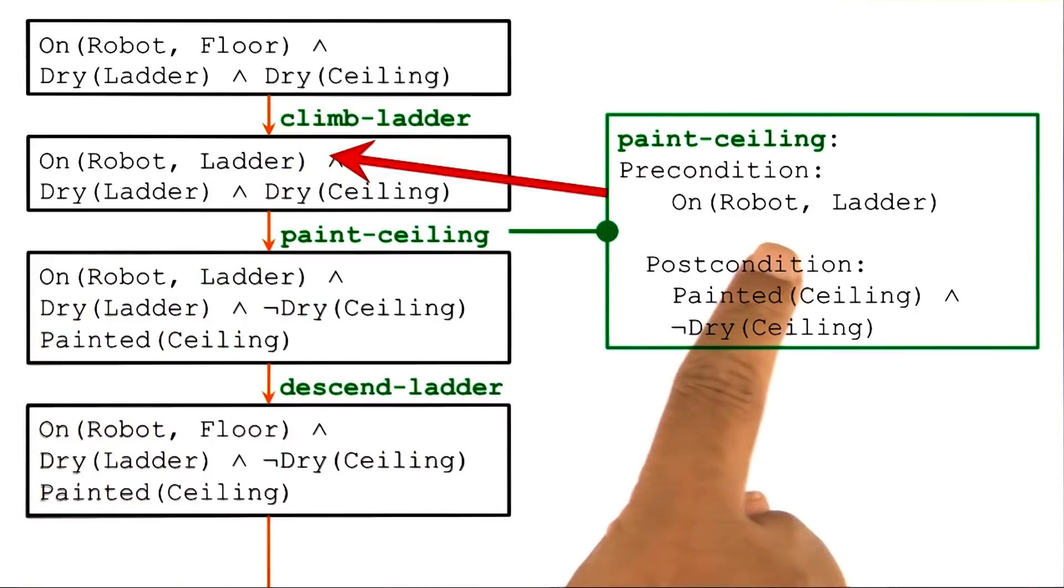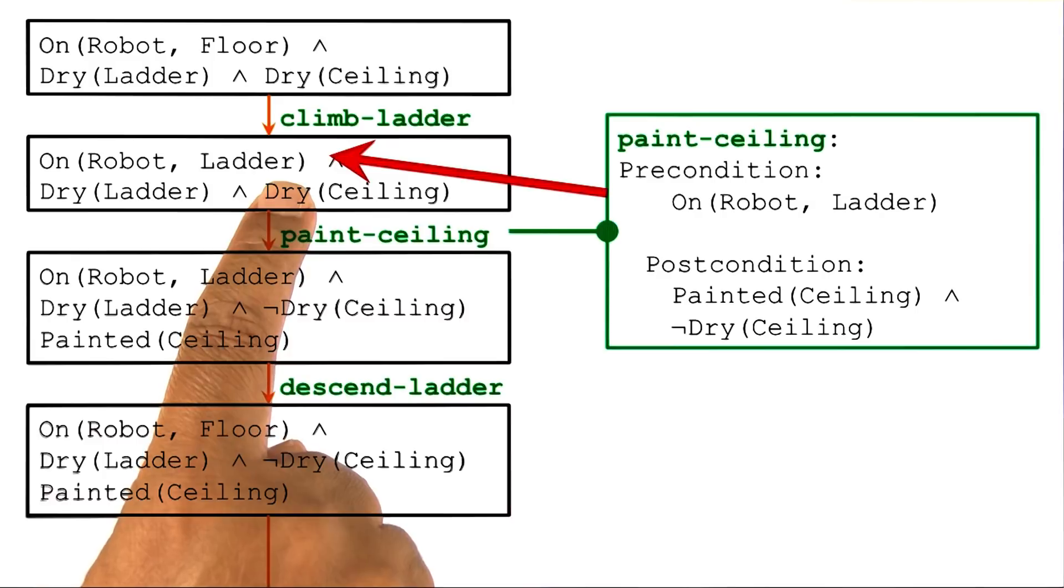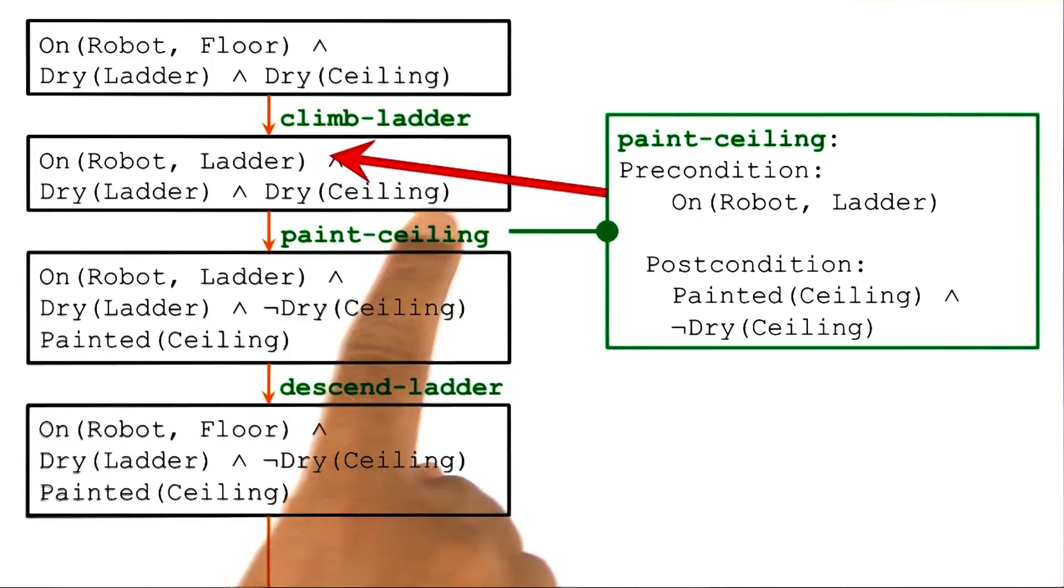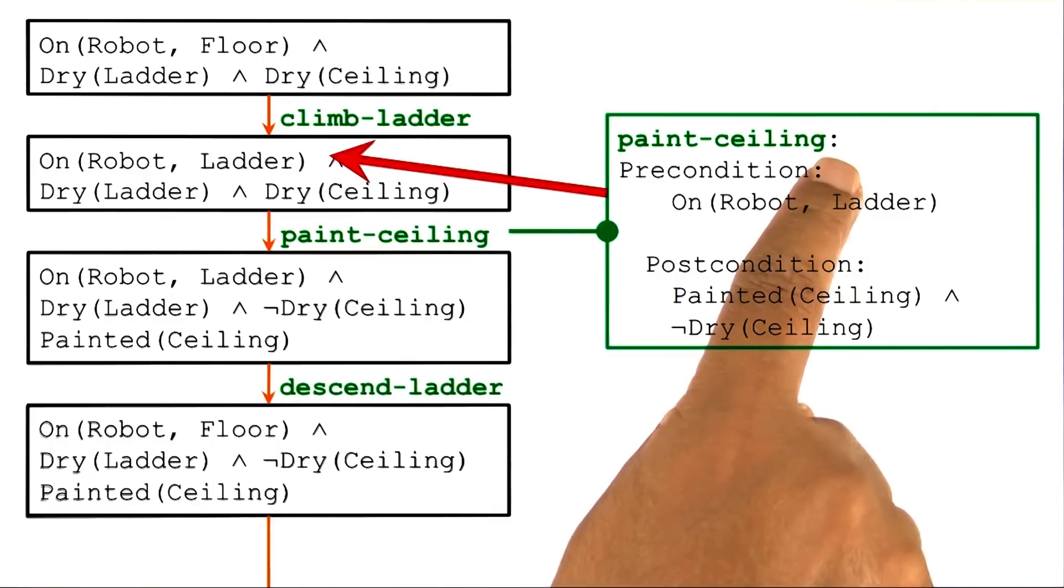Note that the preconditions of this operator exactly match the predecessor state. So we have on-robot-ladder here, we have on-robot-ladder here. So some assertions of the world are true here, and those assertions match the precondition, which is why this operator is applicable.